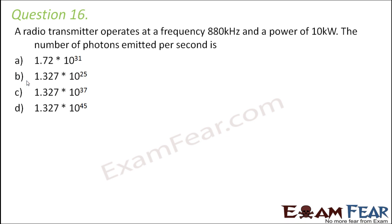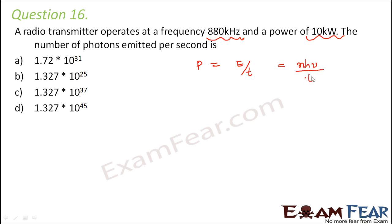Question number 16: A radio transmitter operates at a frequency of 880 kHz and a power of 10 kW. The number of photons emitted per second is to be found. Power is energy per unit time. The energy of one photon is hν, so for n photons the energy is nhν, and power P equals nhν divided by t. Rearranging, n equals P times t divided by hν.